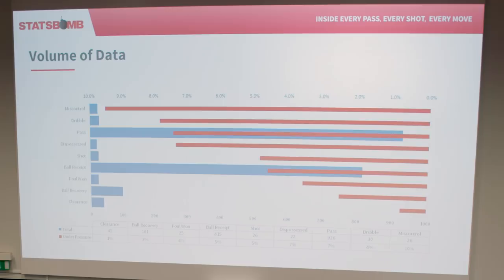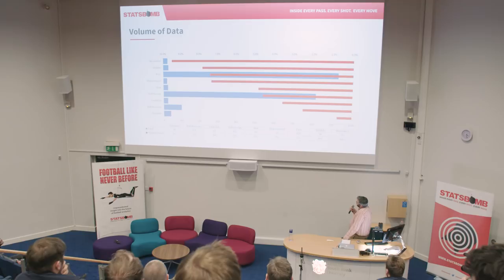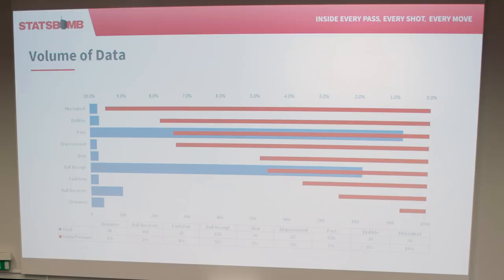We've got about 120 events every game marked as under pressure. The blue bars here show the overall volume of events — as you'd expect, passes and ball receipts massively dominate everything else. There's a slightly lower number of ball receipts than passes because we can't always confidently state who the pass was aimed at. On the right you see the proportion of these events played under pressure. By raw count, passes and ball receipts are most common, but the highest ratio is miscontrol — that's simply when the ball bubbles away from you without being tackled, and that happening under pressure isn't surprising.